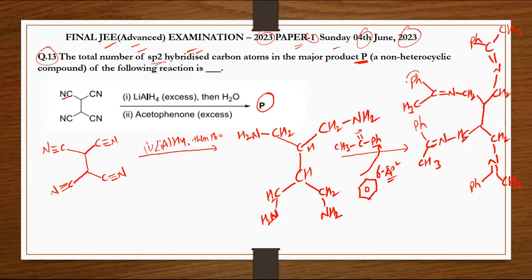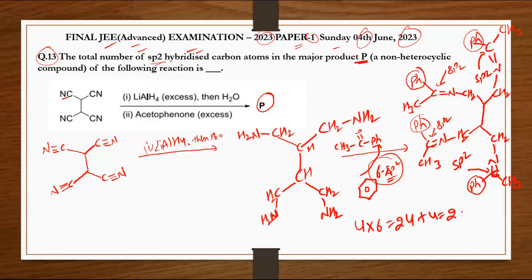Now here the sp2 hybridized carbons are: one, two, three, and four phenyl groups. Each phenyl group has 6 sp2 hybridized carbons, so 4 times 6 equals 24. These carbons are also sp2 hybridized, plus 4 more, so the total answer is 28.